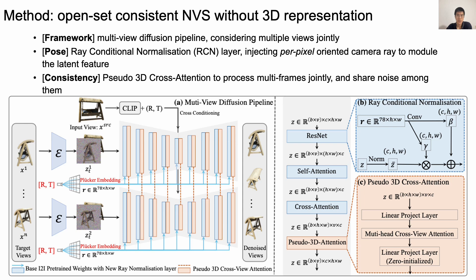To further ensure consistency, we introduce a pseudo-3D cross-attention layer to merge information between different frames. Similar to our Ray Conditional Normalization, this pseudo-3D cross-attention layer is also applied at every intermediate layer. In order to reduce variance between different views, we also propose to start sampling each view from the same noise vector x_t.